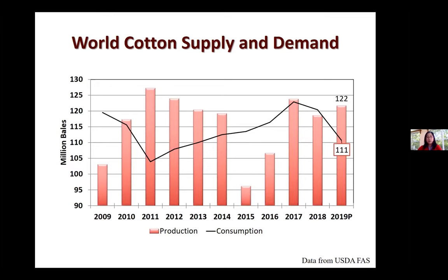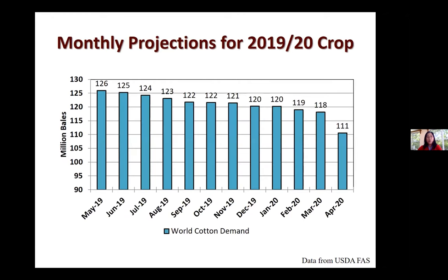Let's take a closer look at the adjustment of this number for the 2019-2020 marketing year. The first release of the world cotton demand forecast was in May of last year. At that time, world cotton demand for the 2019-2020 marketing year was forecasted at 126 million bales, and world cotton supply was a little bit lower than demand at 125 million bales. Over time, due to uncertainty of international trade and its corresponding slower economic growth globally, USDA gradually adjusted down their forecast of world cotton demand until March 2020. What caused the sharp drop in the April 2020 forecast for world cotton demand?